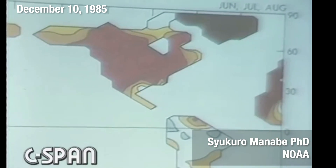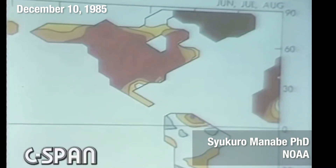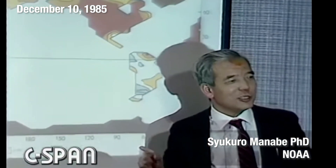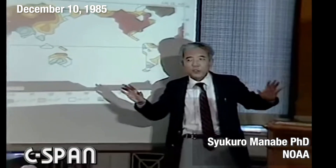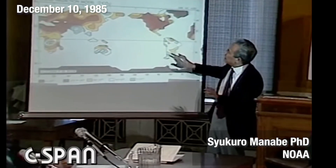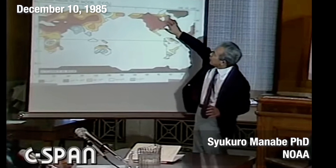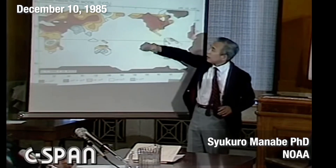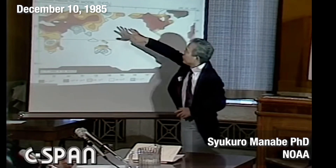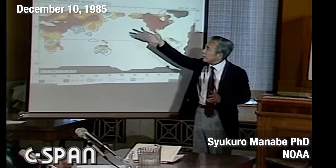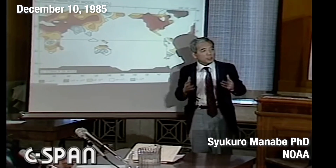This also reveals the present limitations of the model — you shouldn't take literally every small wiggle in these results, because the computational resolution is very coarse. But what the models do seem to indicate is that major mid-continental areas over the USA and western Europe, and large areas over the Eurasian continent, will experience soil moisture reduction.